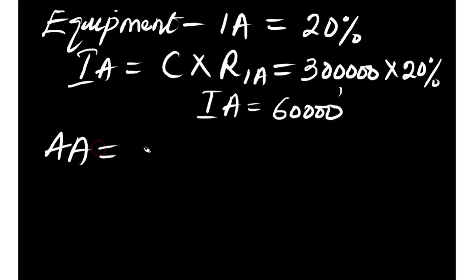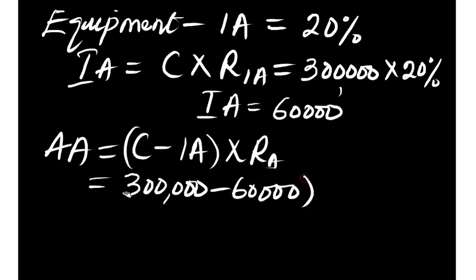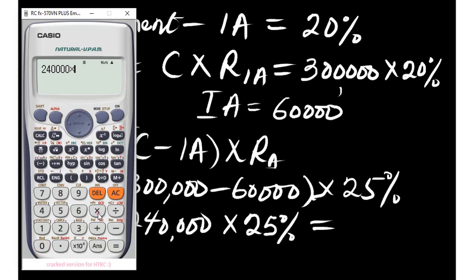For the annual allowance of equipment, the formula is (Cost − Initial Allowance) × rate of annual allowance. So: 300,000 − 60,000 = 240,000. Then 240,000 × 25% = 0.25. From the calculator: 240,000 × 0.25 = 60,000. So the annual allowance for equipment is also 60,000.